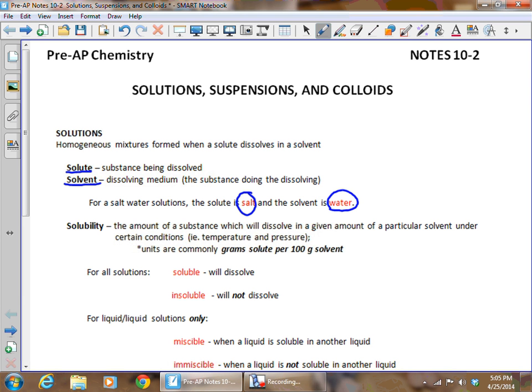Solubility is the amount of a substance that will dissolve in a given amount of a particular solvent under certain conditions, temperature and pressure. The units are commonly grams of solute per 100 grams of solvent, and we'll see an example of a solubility chart in just a few minutes.